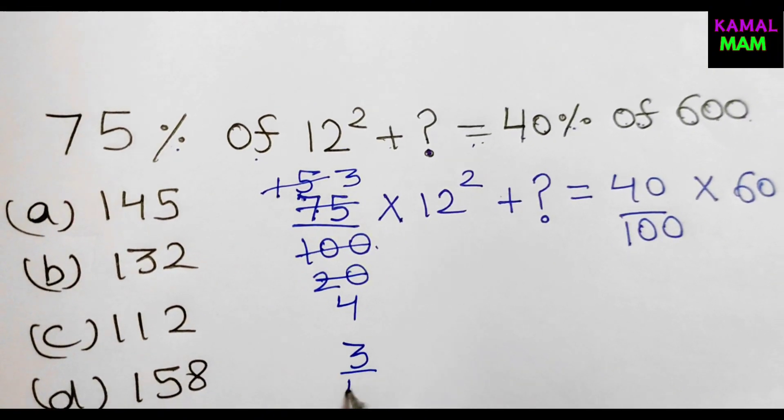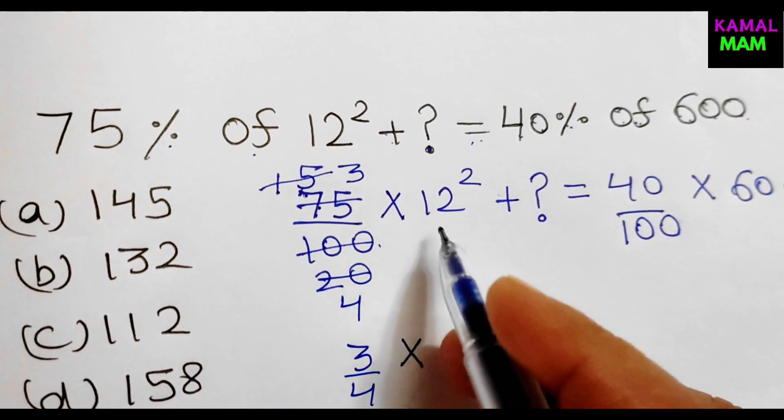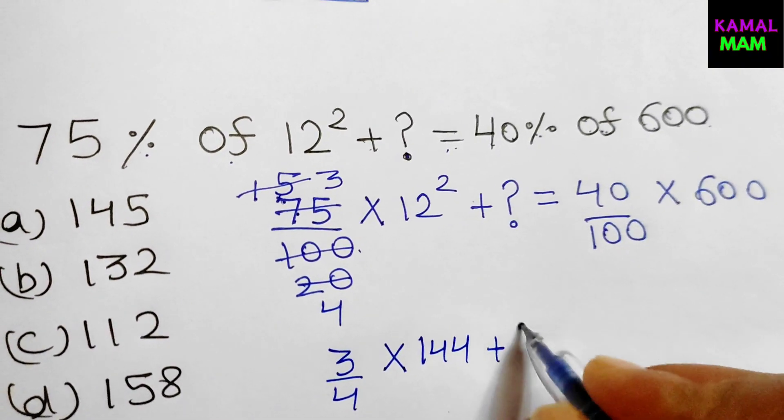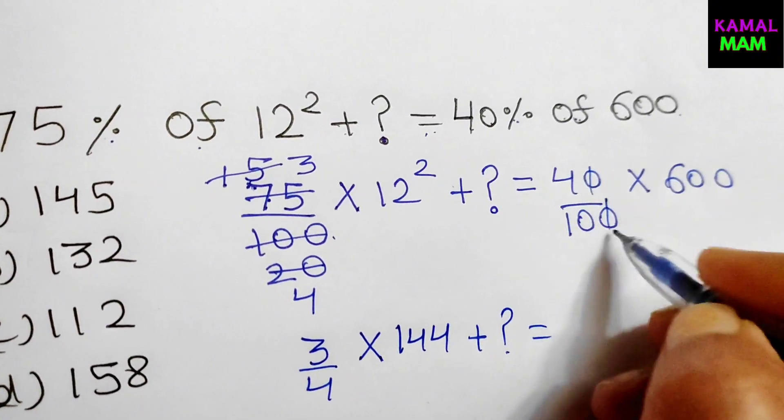3 by 4 multiply it with 12 into 12, we get 144 plus question mark equals. Here 0, 0 got cancelled.